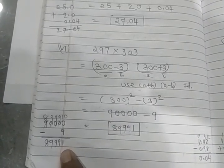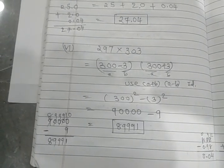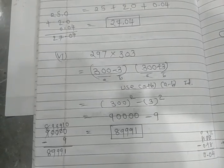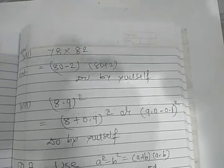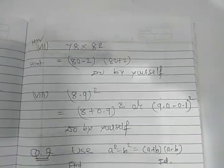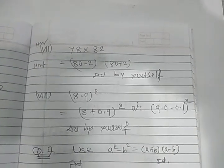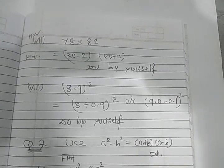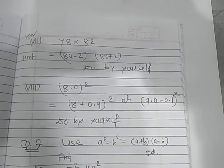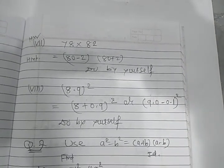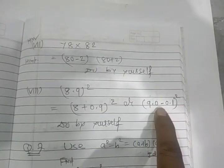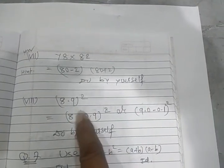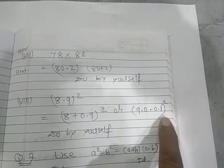So identities used to do our calculation very very easily and within a less time. This seventh one it is homework for you but I am giving the hint: 78 into 82 means what? 80 minus 2, 80 plus 2, and do by yourself. 8.9, here also I am giving the hint: 8.9 means 8 plus 0.9 whole square or you can do this 9.0 minus 0.1 whole square, toh bhi 8.9 aajayega. So these you can do by a plus b whole square identity, this you can do by a minus b whole square identity.